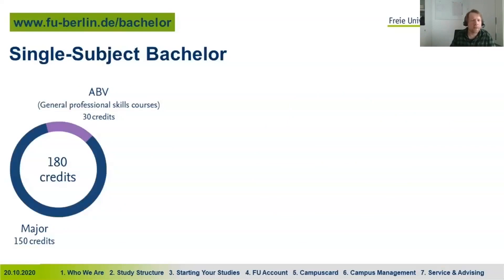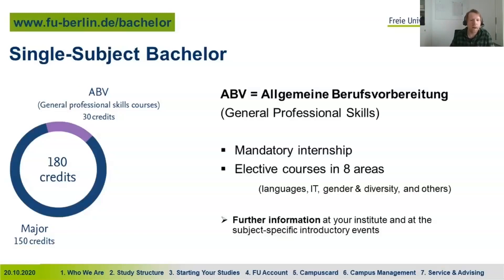We have single-subject bachelors where you basically study one program, but you also have a field called ABV — Allgemeine Berufsvorbereitung or general professional skills — worth 30 credits. Within that you usually do an internship, which can also be abroad. The rest you can spend on different courses in eight areas like languages, IT, and gender diversity. For further questions on ABV, visit your institute's introductory events or check the modules in Compass Management.